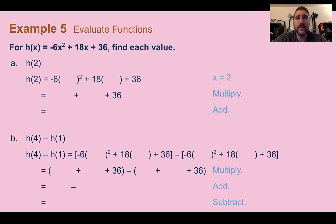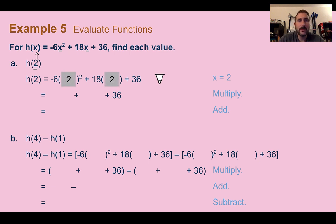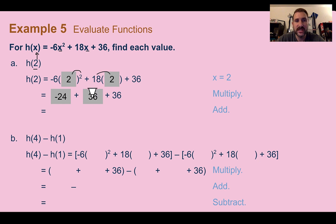Example 5 — evaluate functions: for h of x equals negative 6x squared plus 18x plus 36, find h of 2. We plug in 2 for every x. Following order of operations — exponent first: 2 squared is 4, times negative 6 is negative 24; then 18 times 2 is 36; adding negative 24 plus 36 plus 36 gives 48.